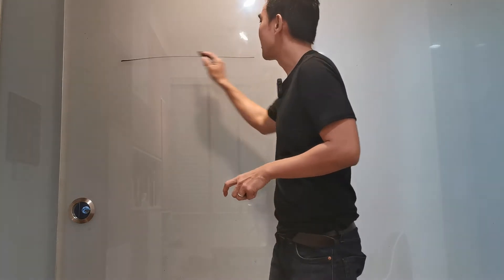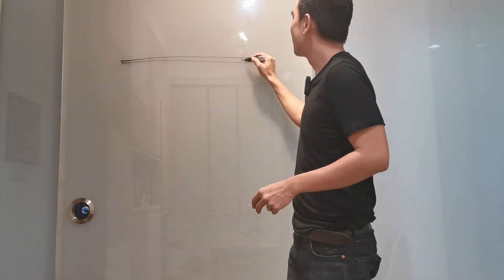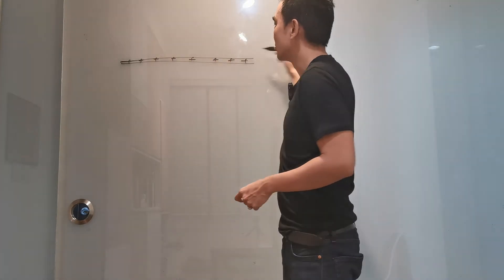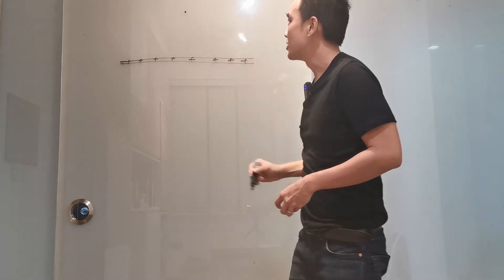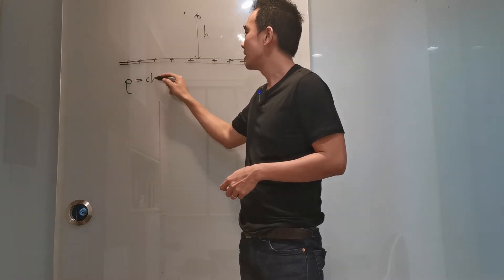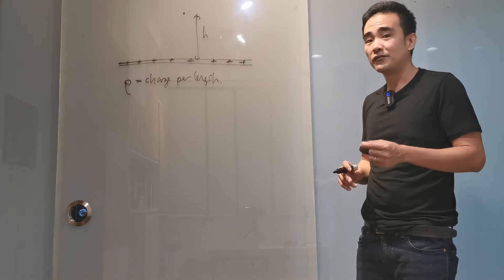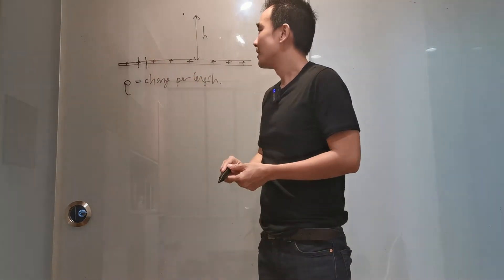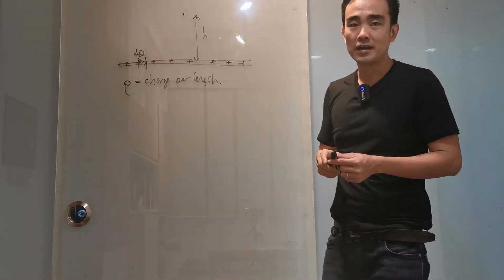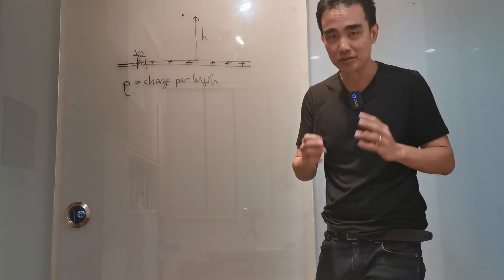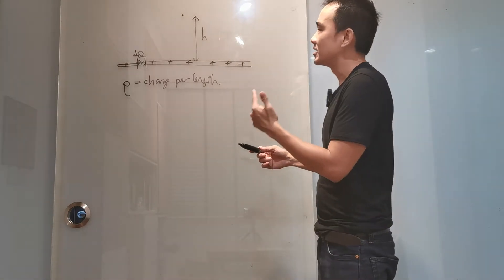Let's take a look at a scenario where we have an infinitely long line charge — positive, positive, positive — going to infinity on both the left and right. I'm trying to find the electric field at a point at distance h above the line charge. We define rho as the charge per length. There will be integration because we need to find the field due to a small element dq, then sum up — which means integration will be involved.